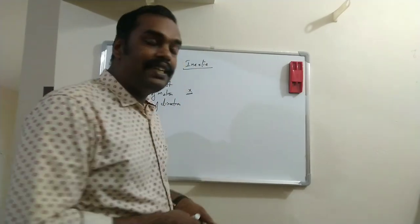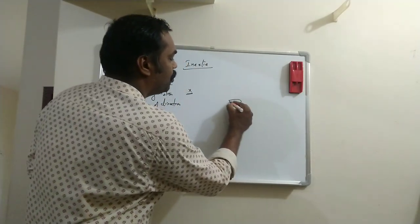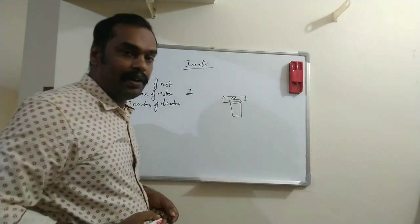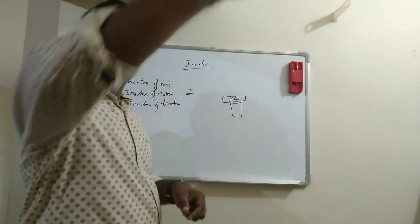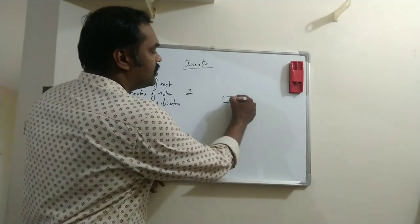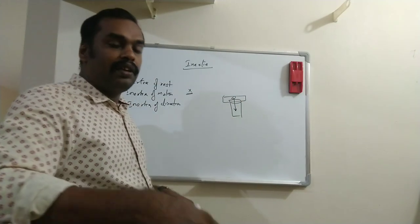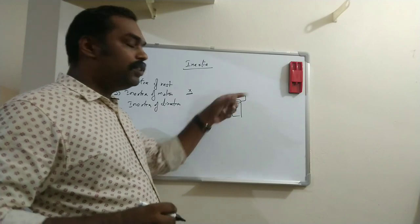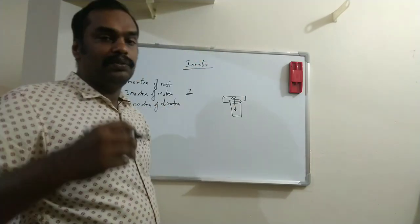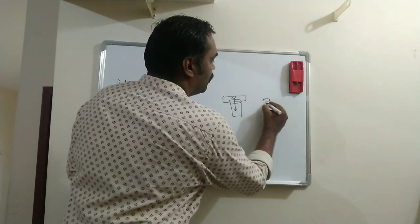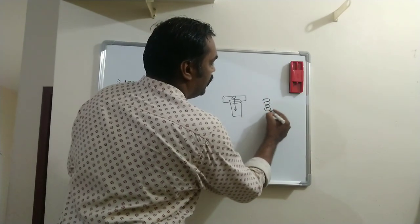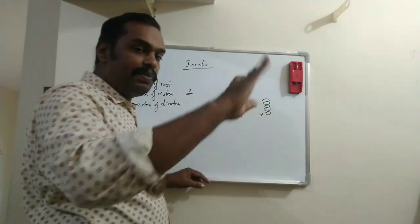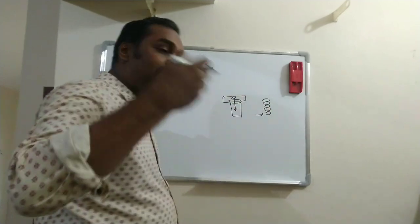You can do a coin experiment. This is an example of inertia — the coin falls directly into the glass. The coin falls directly into the glass due to inertia, dropping straight down.